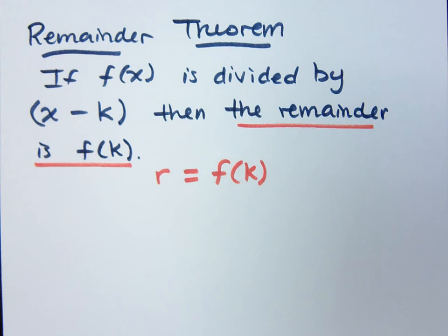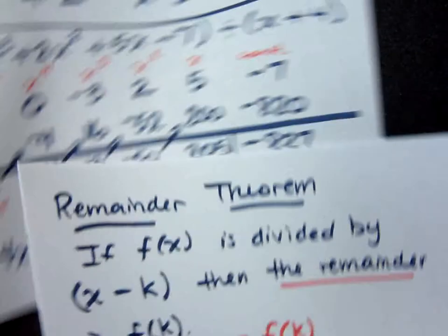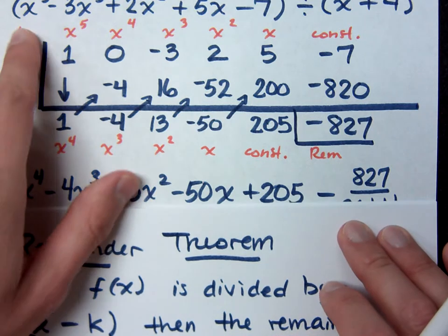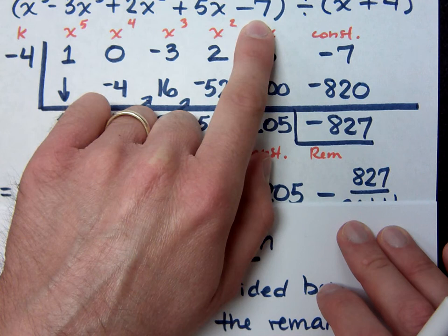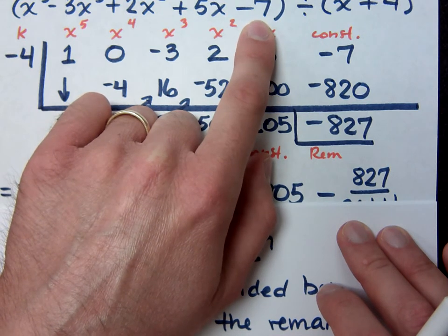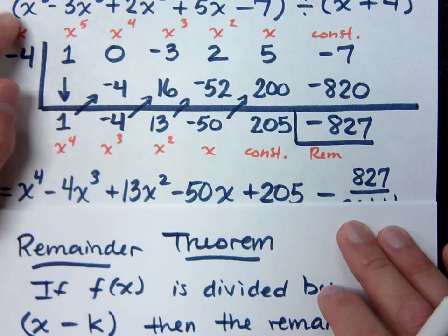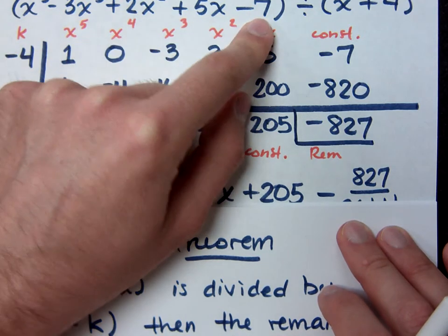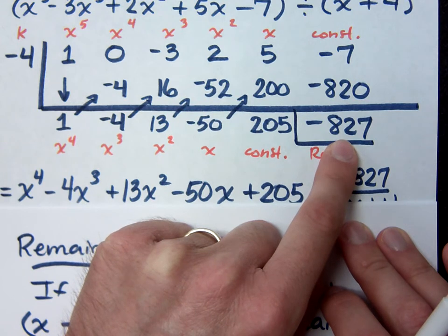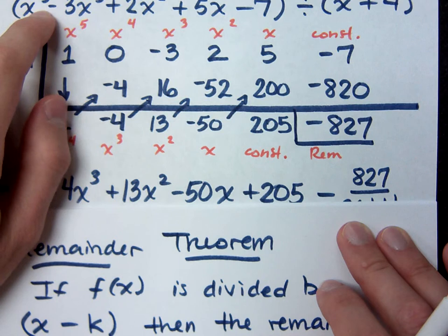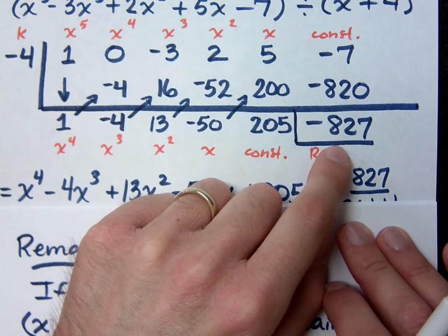Look back at this last example that we had. If this function had been my function, the k value is not plus 4 — it's negative 4. If I had plugged negative 4 into all of these x's, my answer would be negative 827. Do you know what negative 4 to the 5th power is? It's negative 1024. But instead of having to plug in and get really large numbers, especially with things to the 4th and 5th power and larger, if I do the synthetic division it went pretty smoothly and I can get the answer.